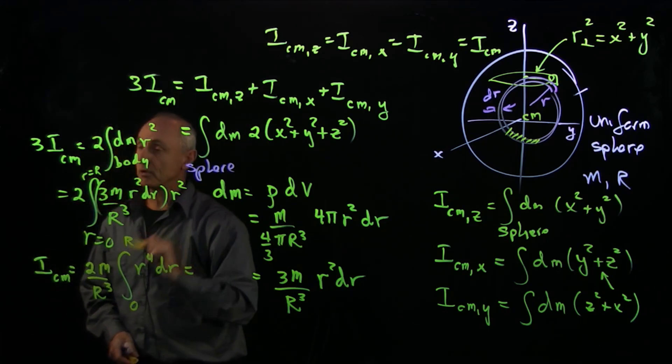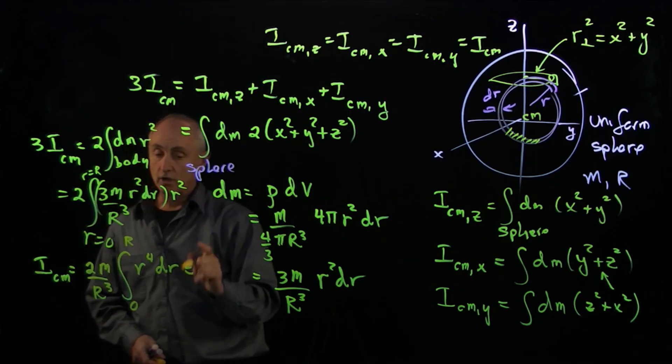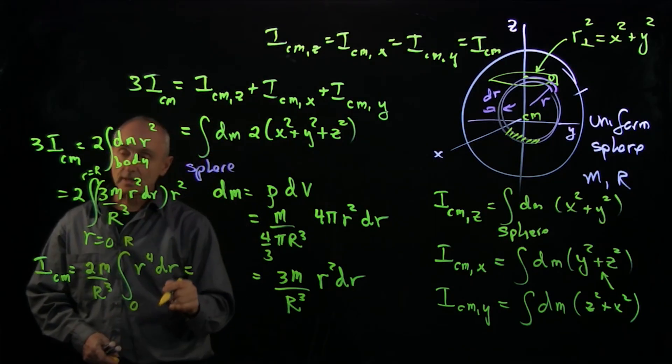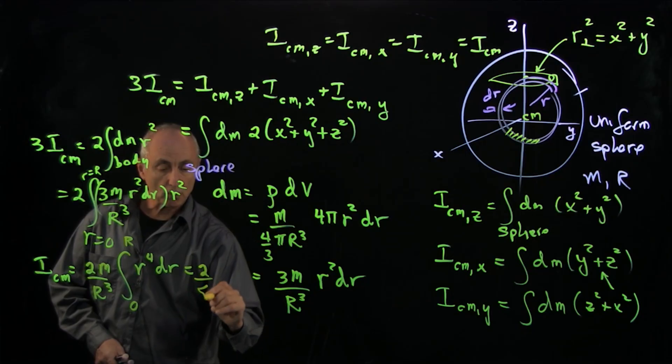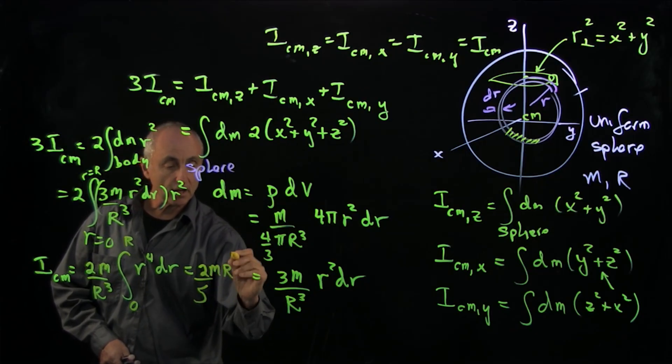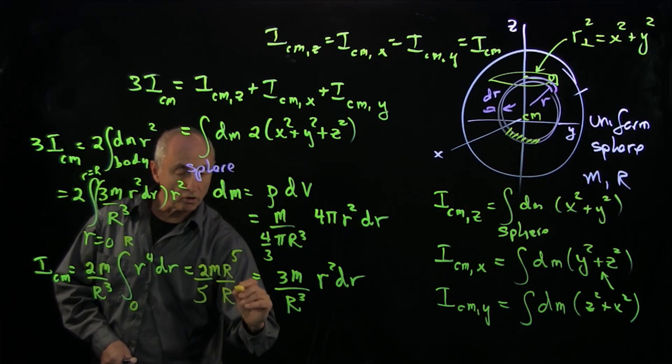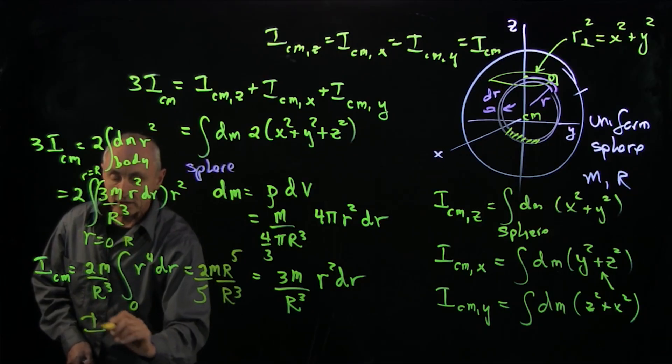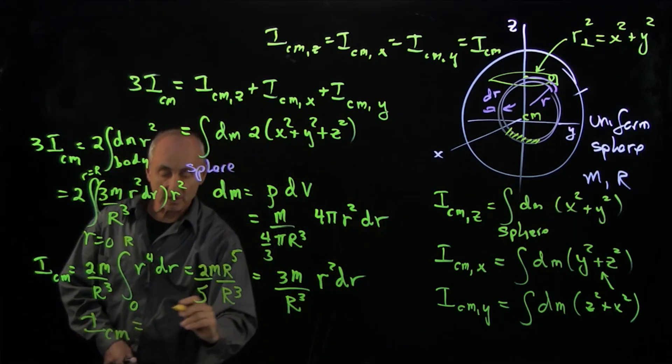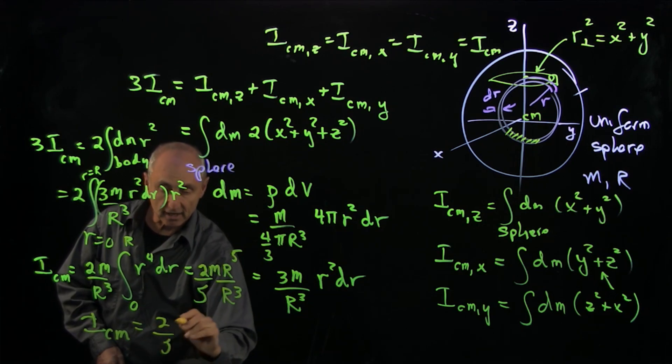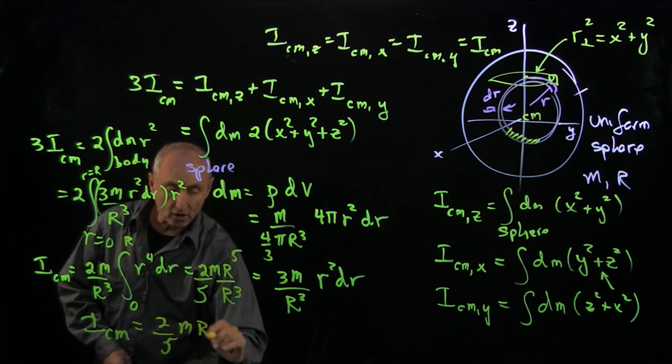And that's a simple integral to do. r to the fourth is r to the fifth divided by 5. And so we get 2 over 5m r to the fifth over r cubed. And we conclude that the moment of inertia about any of the axes of the sphere is 2 fifths m r squared.